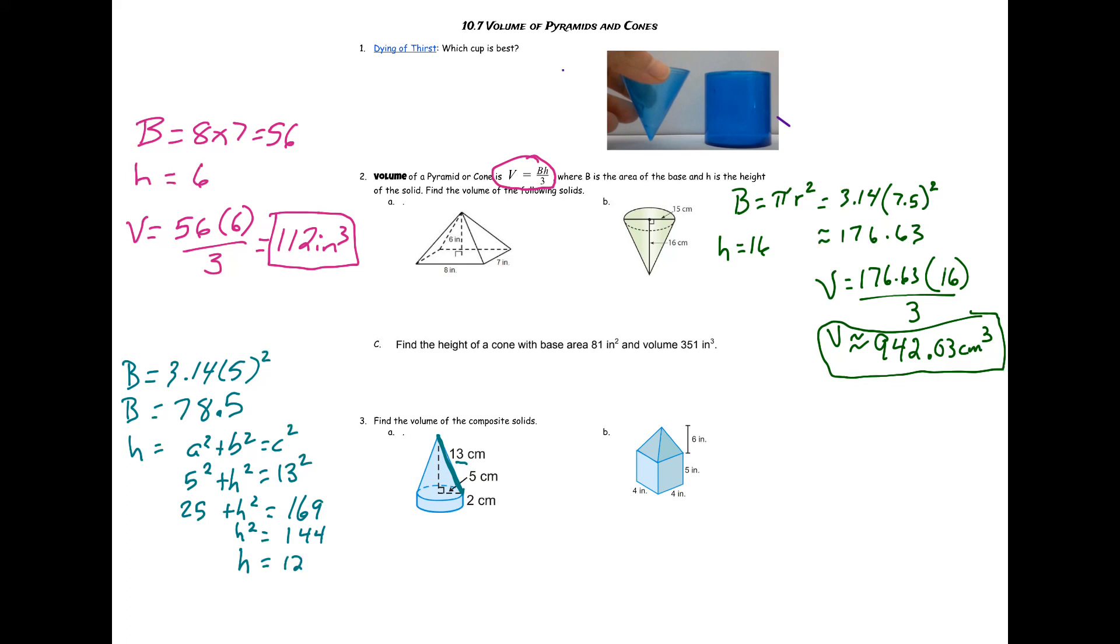All right, so all that work and we did find out that h was going to be 12. So now we can find the volume of the cone. The volume equals 78.5 times 12 divided by 3. This is volume of the cone. Go ahead and plug it in your calculator and get the volume of the cone: 314 centimeters cubed.